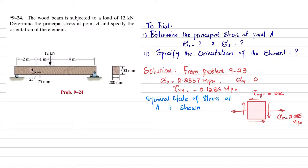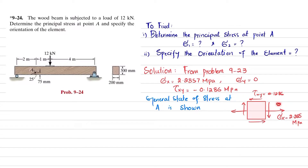From problem 9-23, which I have discussed, we found the normal stress sigma x which is 2.2857 megapascal. There is no normal stress in the y direction, and the shear stress is minus 0.1286. That is represented as the general state of stress at point A. For those who don't know how I calculated this, I recommend you go to problem 9-23 and watch that.